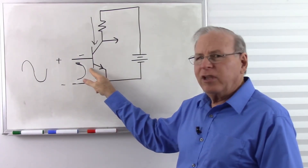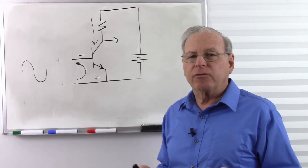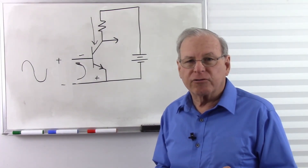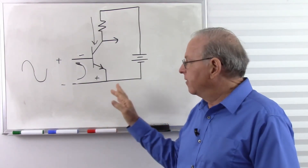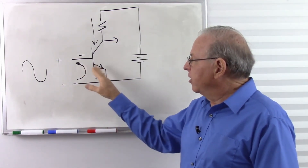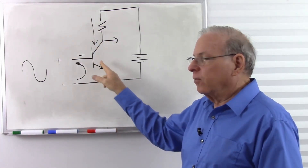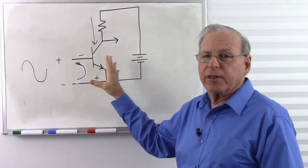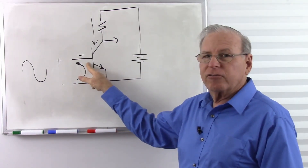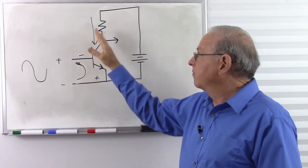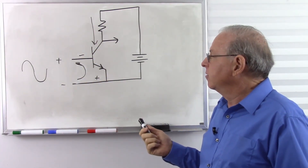We don't want to exceed approximately 5 volts when we do this, because the base-to-emitter junction of a bipolar transistor acts like a Zener diode — it breaks down at approximately 5 volts. So we don't want to exceed that; it will break down and we will get undesirable current flow. But as long as we stay below 5 volts, the transistor is simply turned off and there's no current flow in any direction. That's a fairly simple answer to the question.